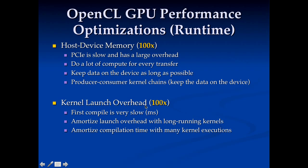Another big issue is kernel launch overhead. The first time you go to launch a kernel, you have to compile it. Compilation can be incredibly slow — it can take tens or hundreds of milliseconds. Remember, you're running a full compiler and it can take a long time. So you want to make sure that you amortize this overhead with long-running kernels or lots of kernel executions. If you run a kernel exactly once, this first compilation is going to be a real problem.